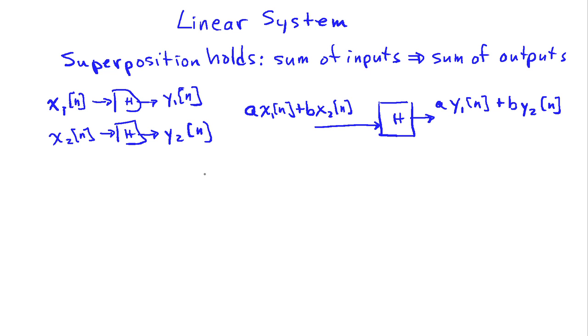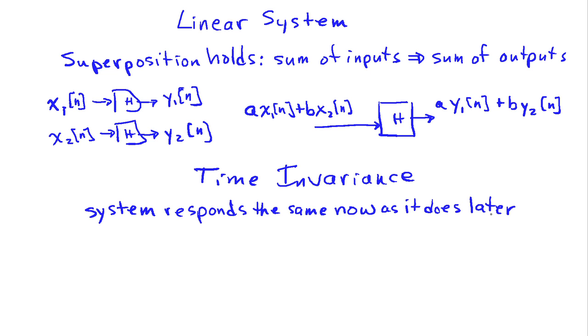Now we're going to complement that with the idea of time invariance. A time invariance system responds the same no matter when you apply the input to it or test it. It responds identically now as it does later. Characteristics of the system are not changing with time. So if I put in an input x of n and that generates an output y of n, then a time invariance system is going to satisfy the property that I can delay the input by any amount that I want, and all that does is it produces the equivalent output delayed in time.